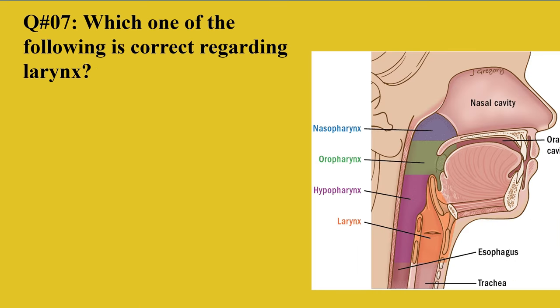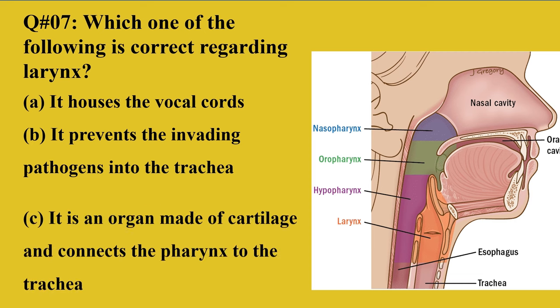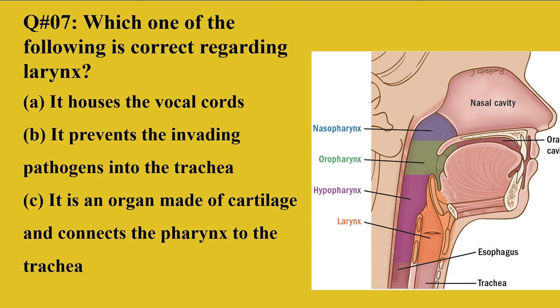Question number 7: Which of the following is correct regarding the larynx? A: it houses the vocal cords, B: it prevents invading pathogens from entering the trachea, C: it is an organ made up of cartilage and connects the pharynx to the trachea, D: all of the above.